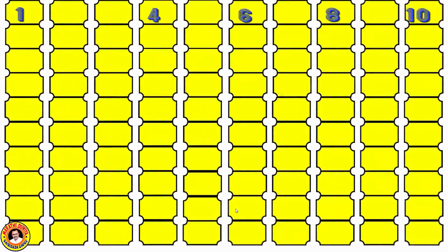Now recite all numbers between those numbers in serial order. In the first line, the given numbers are 1, 4, 6, 8, and 10, and the remaining numbers are 2, 3, 5, 7, and 9. We complete the first line: 1 to 10.